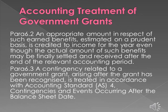Para 6.2: An appropriate amount in respect of such earned benefits, estimated on a prudent basis, is credited to income for the year even though the actual amount of such benefits may be finally settled and received after the end of the relevant accounting period. Para 6.3: A contingency related to a government grant arising after the grant has been recognized is treated in accordance with Accounting Standard AS 4: Contingencies and Events Occurring After the Balance Sheet Date.